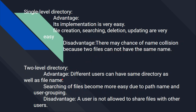That is the advantage of the two-level directory system. In a two-level directory system, different users can have the same directory name as well as the same file name. When there is a two-level directory, access to a file is done through the first level then the second level, so having the same directory name is not a problem. Searching of files becomes easier due to the path name and user grouping. The disadvantage is that the user is not allowed to share files with others.